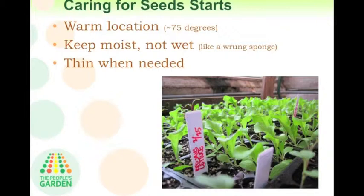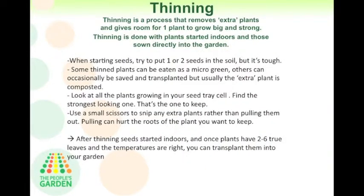You'll then want to thin your seed starts when needed. Thinning is a simple process — it removes extra plants and gives room for one specific plant to get the nutrients and root space it needs to grow to its full form. Thinning is done when plants are started inside and also when started directly outside in the garden. We try to plant one or two seeds per cell, but it's tough with small seeds, so we do need to thin them. When you thin plants, you can eat some as microgreens — things like beets, arugula, and most leafy greens are great to eat in small micro form. You can make a little salad with students. Some people try to save and transplant the plants being thinned out, but I find it challenging and not always worth the time.